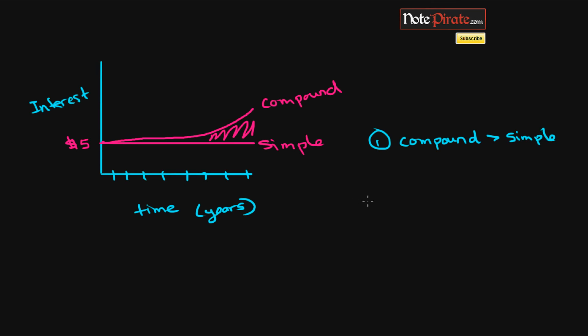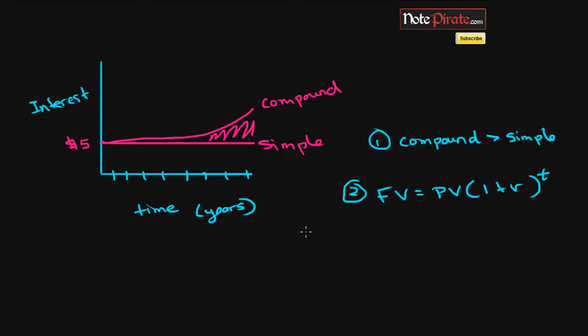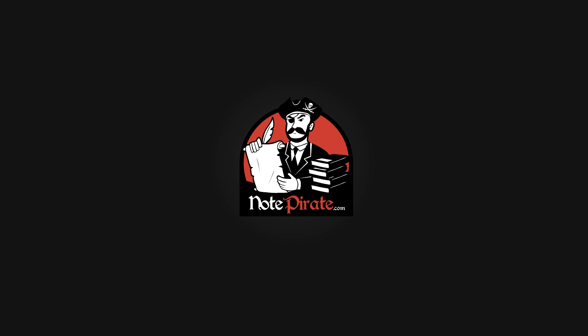So we've covered two things in this video: compound interest creates more interest than simple interest, and we've learned why we use the future value equation. We'll move on to looking at scattered cash flows in the next time value of money video. If you have any questions regarding accounting or any other material, you can tweet us at NotePirate, like us on Facebook to receive updates or share how our videos have helped. Thanks for watching!